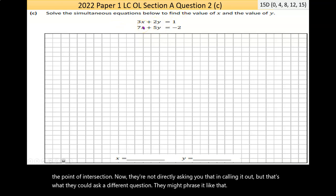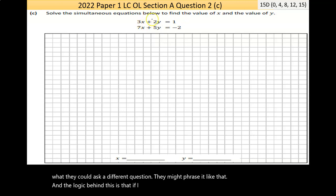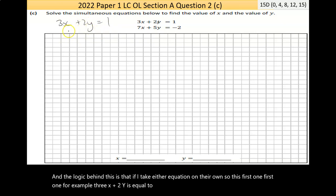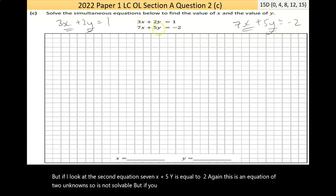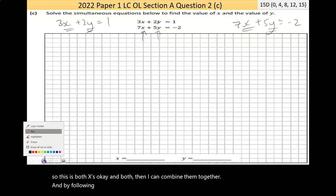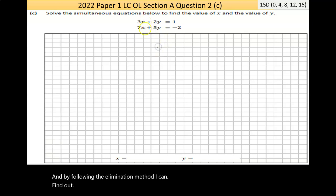This is the equation of a line. This is the equation of a second line. And they're asking you for the point of intersection. And they're not directly asking you that. But that's what they could ask. And a different question, they might phrase it like that. And the logic behind this is that if I take either equation on their own, this first one, for example, 3x plus 2y is equal to 1. On its own, this is an equation of two unknowns. And we cannot solve an equation of two unknowns. But if I look at the second equation, 7x plus 5y is equal to negative 2. Again, this is an equation of two unknowns, so it's not solvable. But if you compare two equations of the same two unknowns, so this is both x's and both y's, well, then I can combine them together. And by following the elimination method, I can basically find out the values of x and values of y. So I'm going to look at this, and I'm going to go, which one do I want to cancel first?